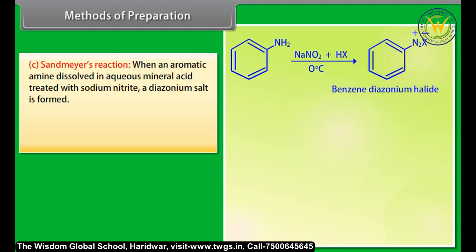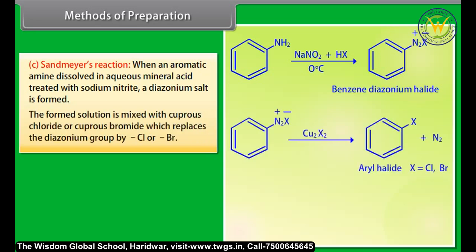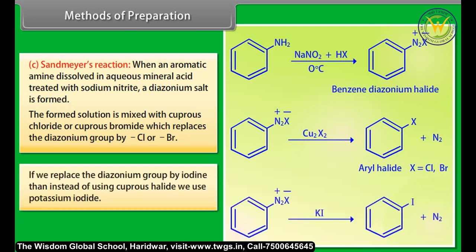In Sandmeyer's reaction, when an aromatic amine dissolved in aqueous mineral acid is treated with sodium nitrate, a diazonium salt is formed. The resulting solution is mixed with cuprous chloride or cuprous bromide, which replaces the diazonium group with Cl or Br. To replace the diazonium group with iodine, potassium iodide is used instead of cuprous halide.